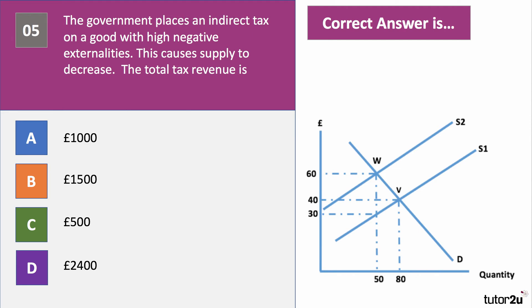Question five. The government places an indirect tax on a good with negative externalities. This causes supply to decrease — you can see the curve shifting from S1 to S2. The question is: what is the total tax revenue that will flow to the government? What area in this diagram represents total tax revenue?